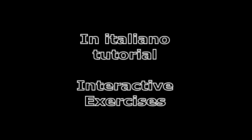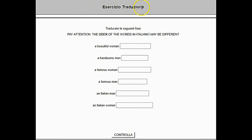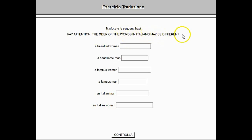In Italiano, we are looking today at how the interactive exercises work. This exercise comes from the first page of In Italiano, the online textbook. At the very top, in the gray bar, it says Esercizio Traduzione, and it's intuitive — you have to translate the input words.